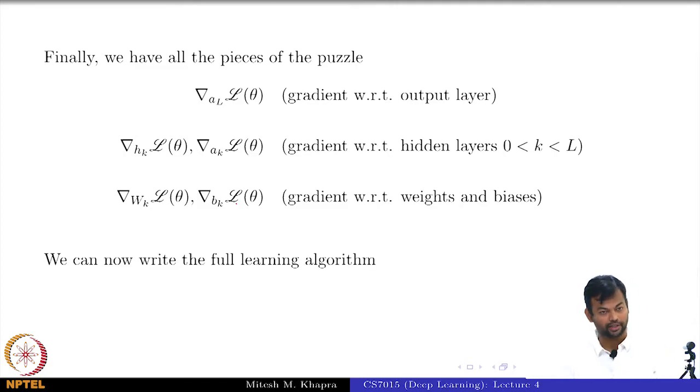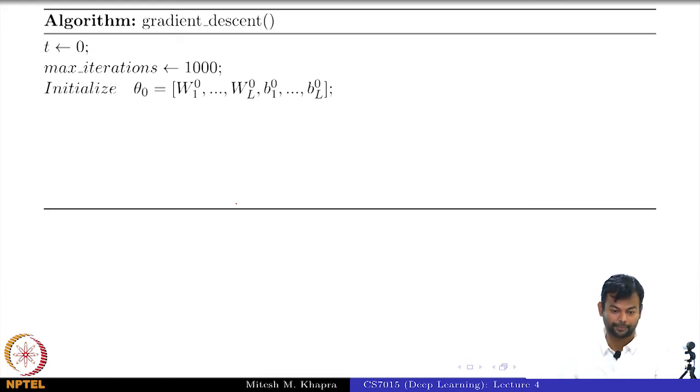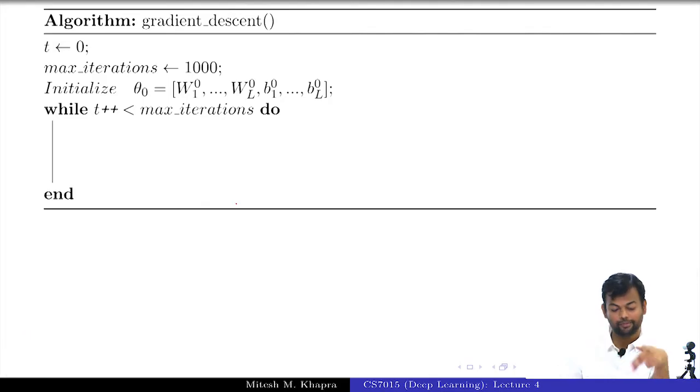Now, we can put all this together into a full learning algorithm. So, let's see what the pseudo code looks like. We have t equal to 0, we will run this for some max iterations, we initialize all the parameters to some quantity, we randomly initialize them. Now, for these max iterations can you tell me what is the first thing that I will do? There will be two functions here, can you tell me what those two functions would be?